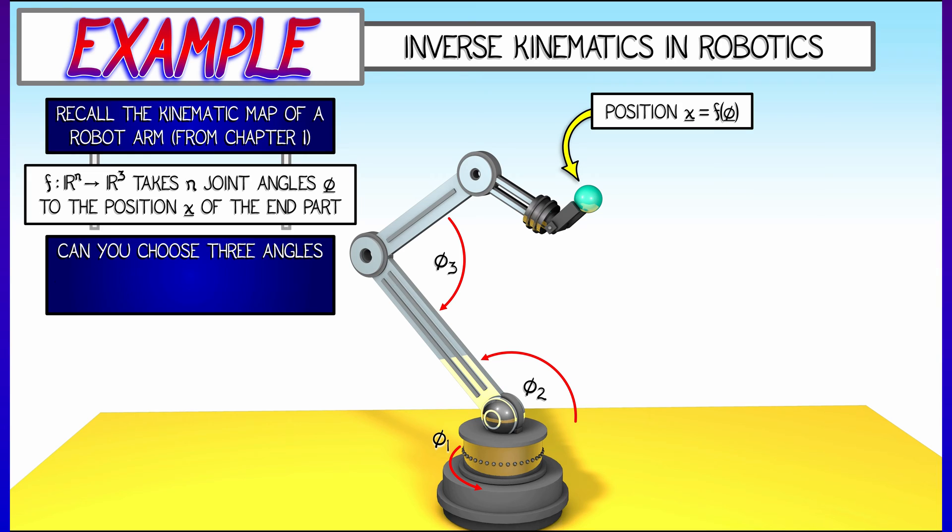That position x is a function of the angles phi. Can you choose three angles, phi1, phi2, phi3, and locally solve for these as a function of the end position, keeping all other angles fixed?